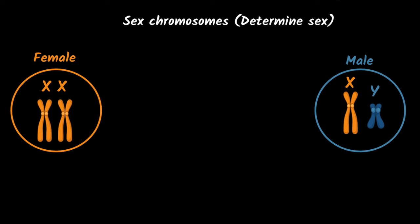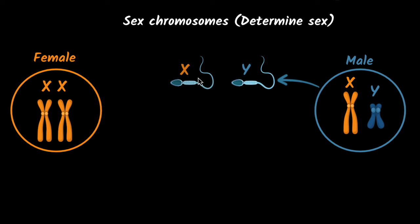Now let's see what are the chances of an offspring being male and being female. If you look at the male, since they have two chromosomes, the sperm cells can either take a Y chromosome or an X chromosome. Remember, sex cells are always haploid, which means they always carry one copy, not both. Therefore, some sperms will carry the X copy, and some other sperms will carry the Y copy.